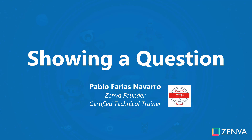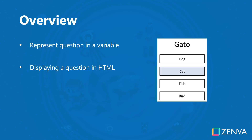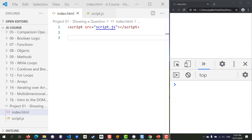In this lesson we're going to get started with creating our project, concentrating on something simple: just showing one question on the screen. We're going to look at how to represent a question as a variable in JavaScript, and we'll be showing a question composed of a question title as well as possible alternatives on the HTML document.